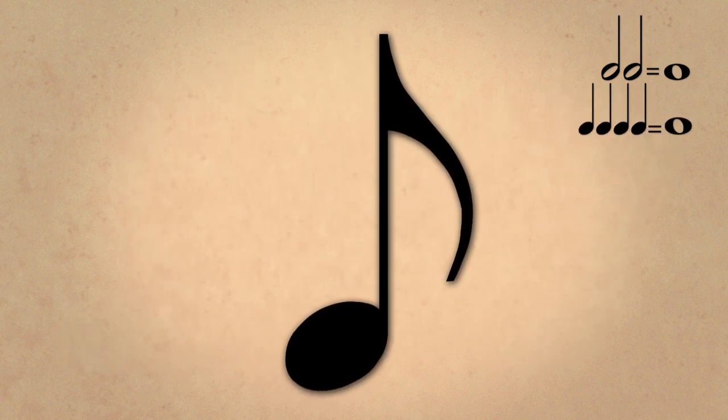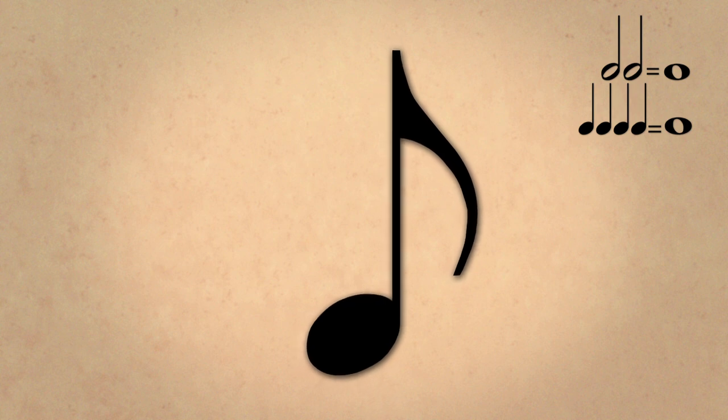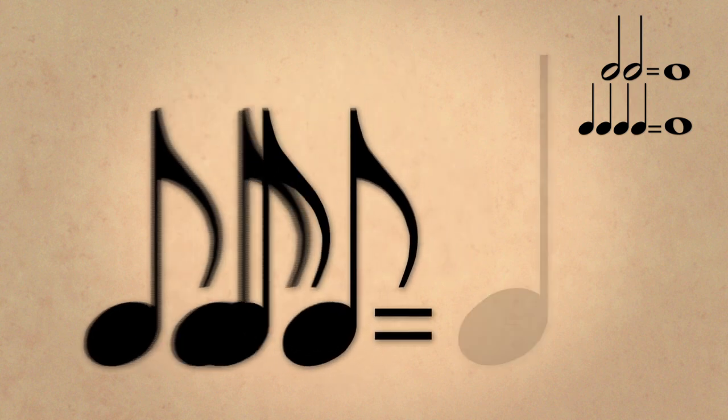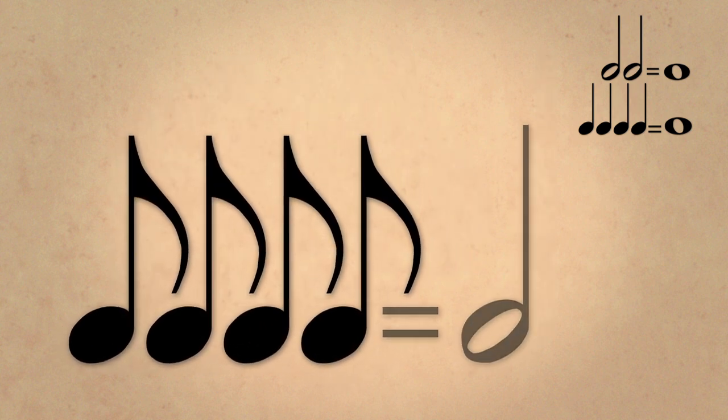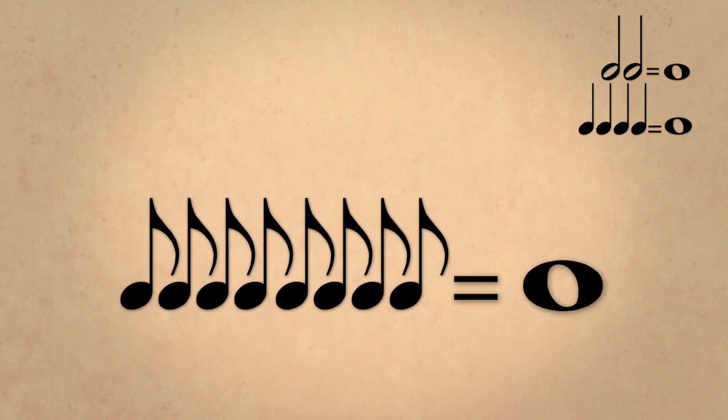An eighth note is like a quarter note, plus a flag. Two of these equal a quarter note. Four equal a half note, and eight equal a whole note.